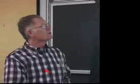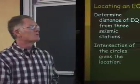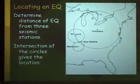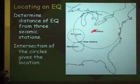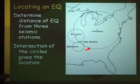To determine the location of an earthquake, you actually need to do this for a minimum of three seismic stations. For example, if we analyzed a seismogram from an earthquake recorded at Columbus, the distance tells us that the earthquake occurred someplace along this solid circle around Columbus.